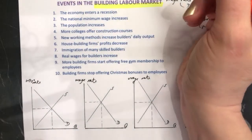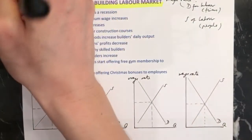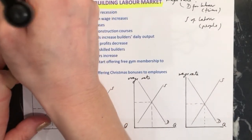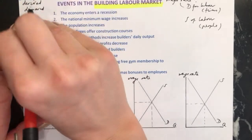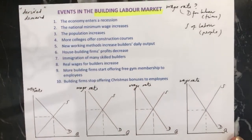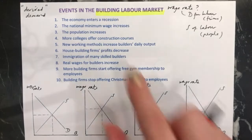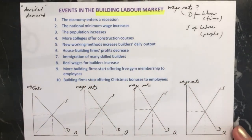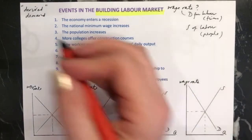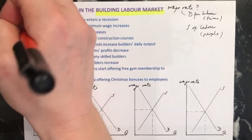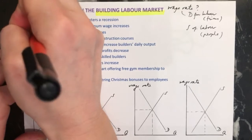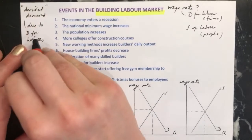Because we're looking at the labour market, remember that the demand for labour is what we call a derived demand. Derived means that it's come from something else. Labour in the building market — builders, electricians, carpenters — we're not demanding them just because we want workers sitting there doing work for us; we're demanding them because of the demand for houses, if we're just talking about the housing market.